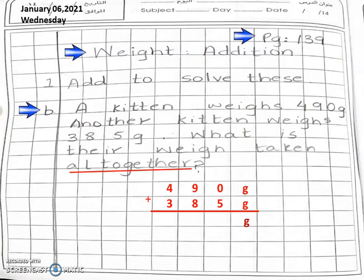Now, from which side will we start our addition? From the right side. First of all, we will add 0 plus 5. What is 0 plus 5? It will be 5.